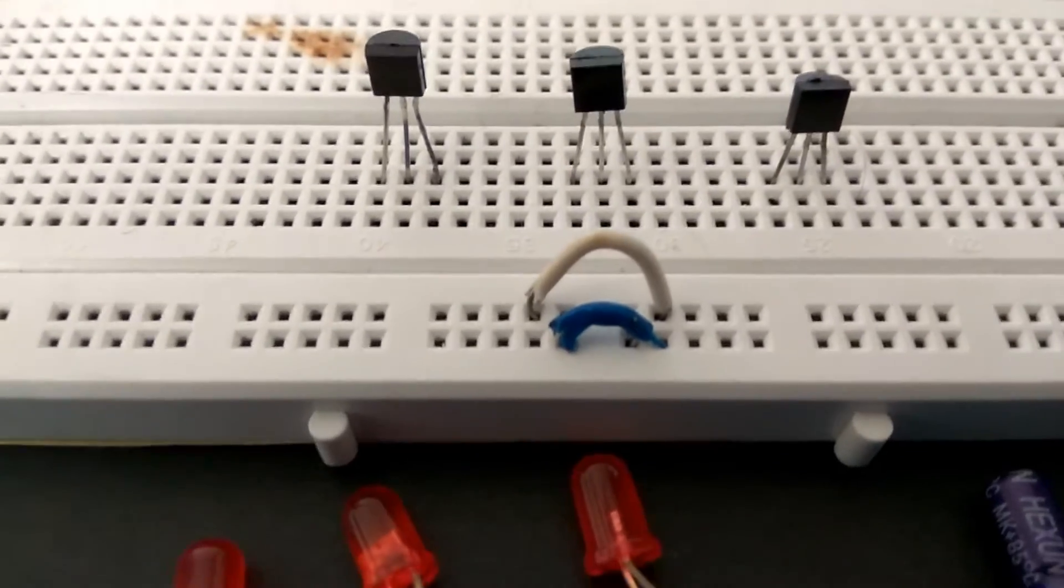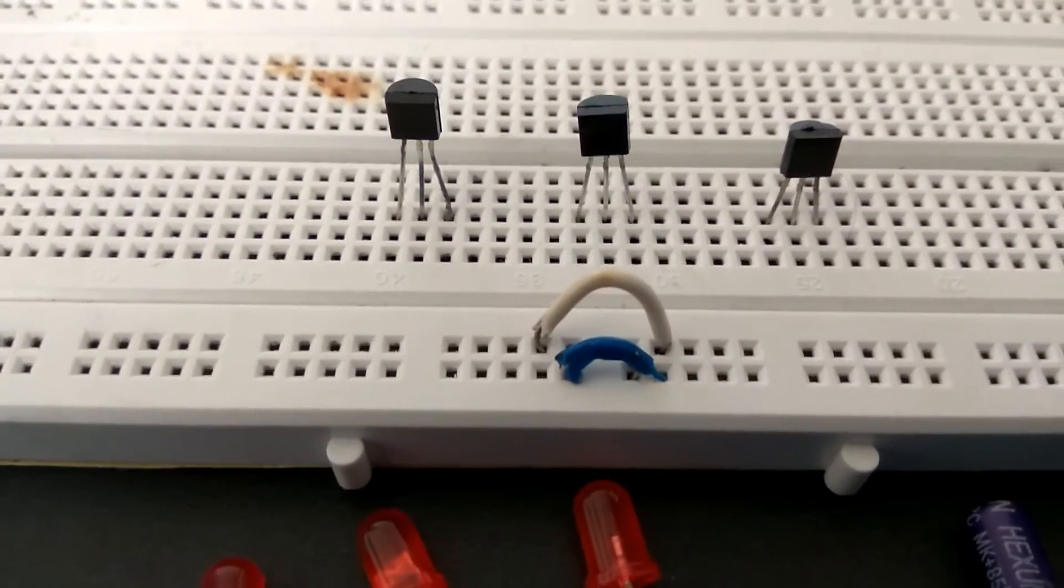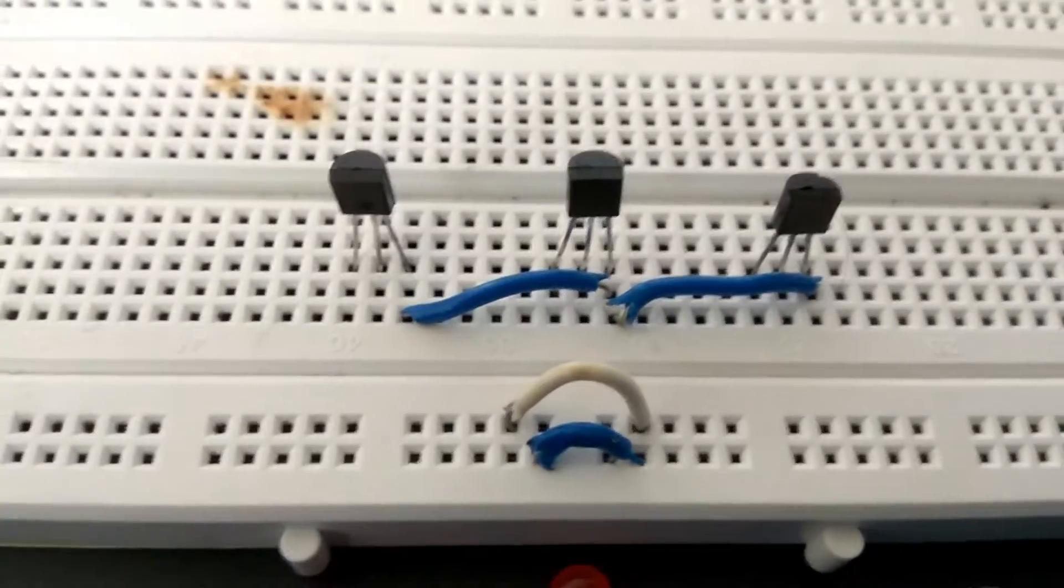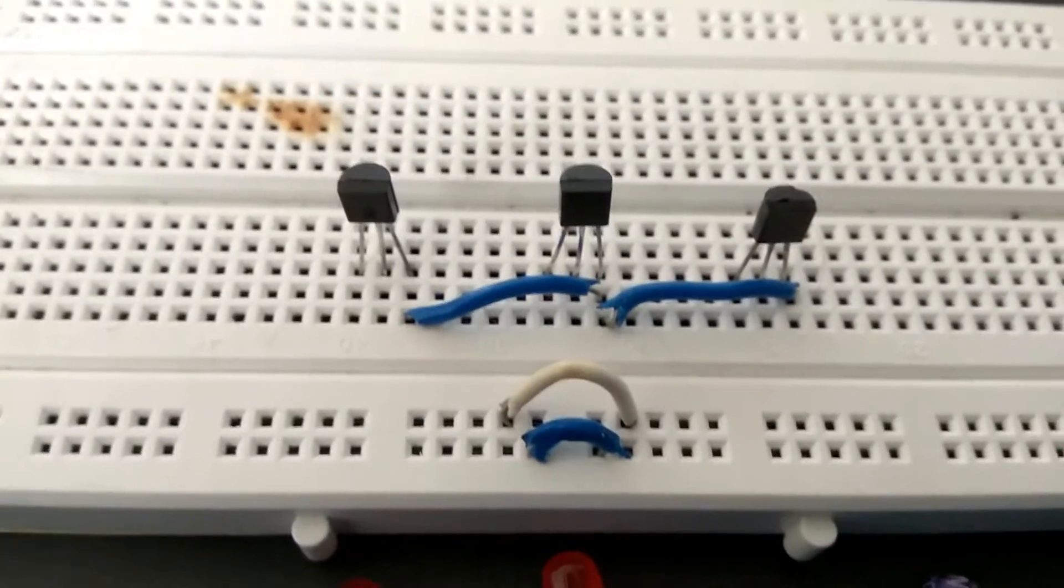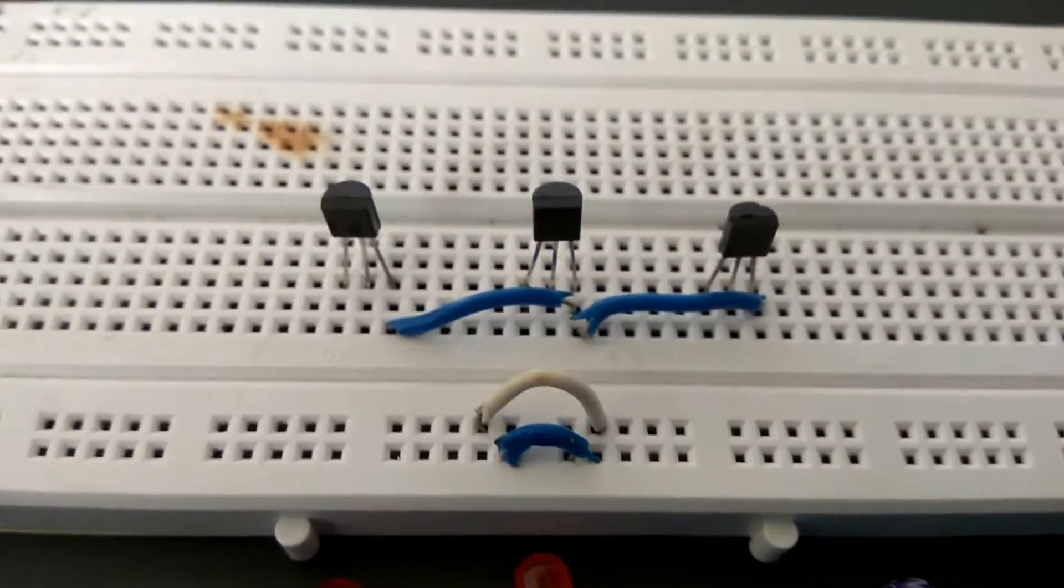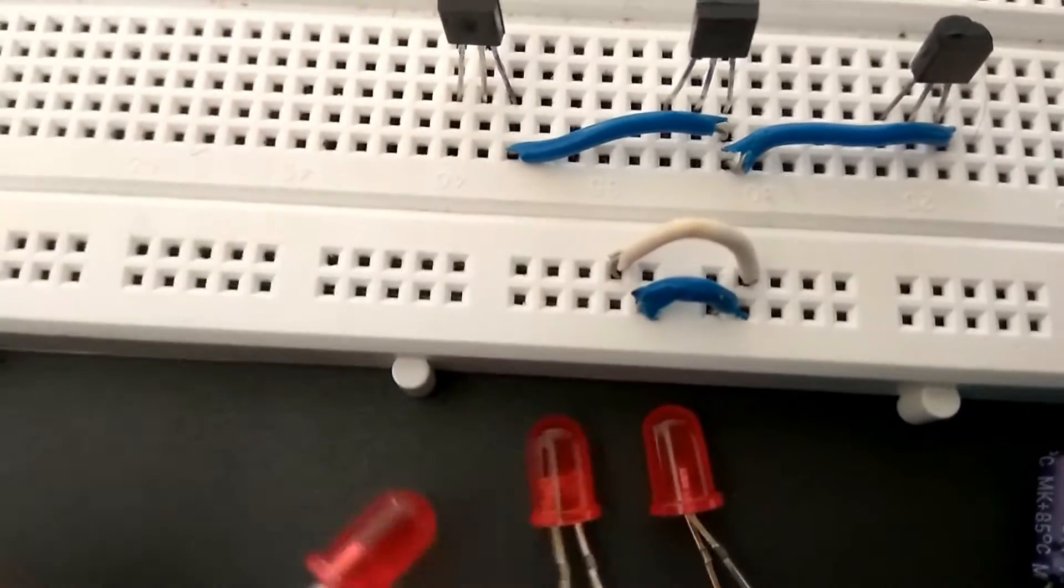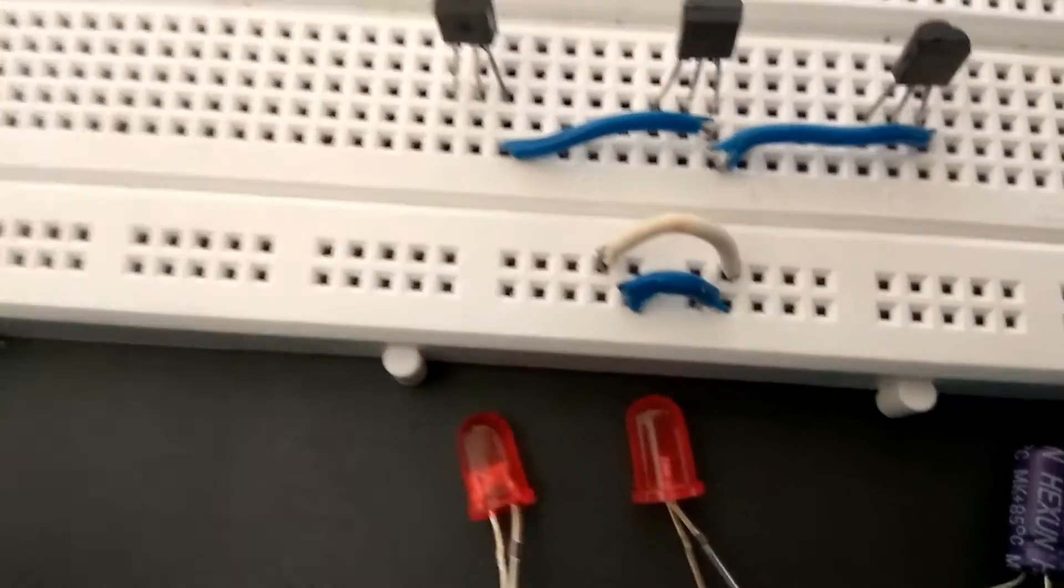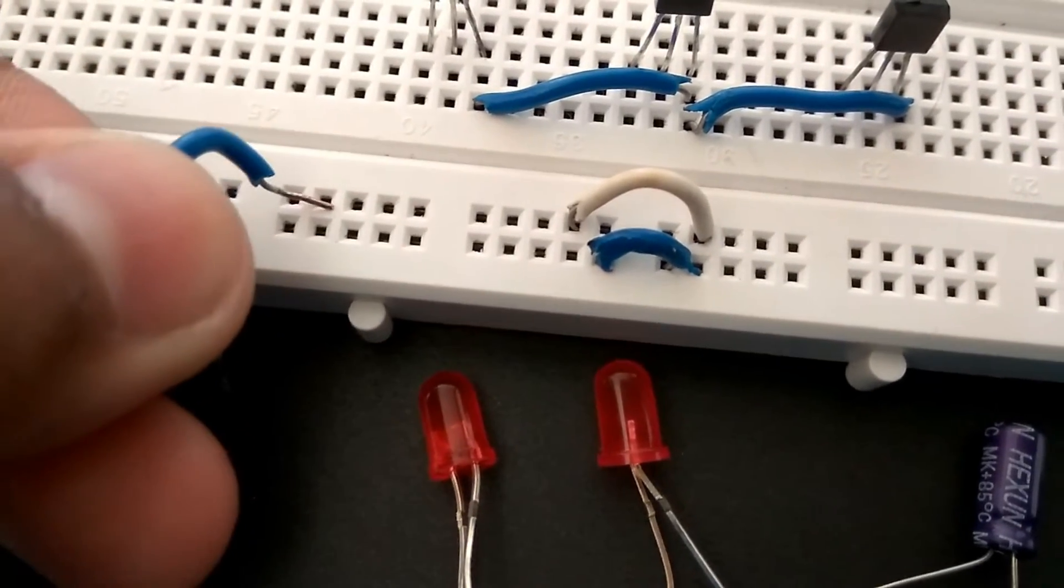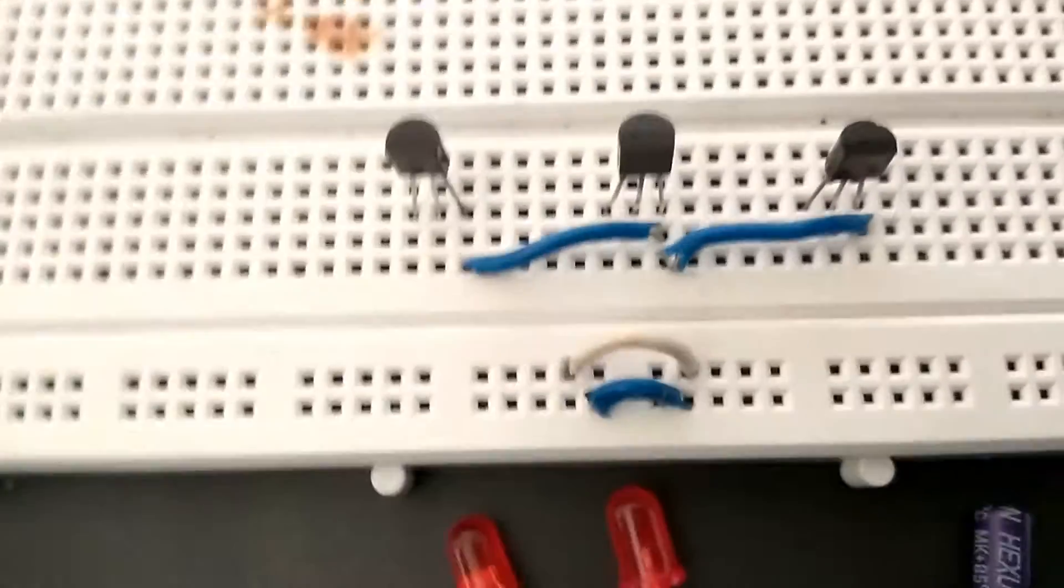Connect the emitters of the transistors together. The emitters are the right pins. Connect the emitter of the third transistor to the negative power supply. I have chosen the upper rail as negative and the lower rail as positive.